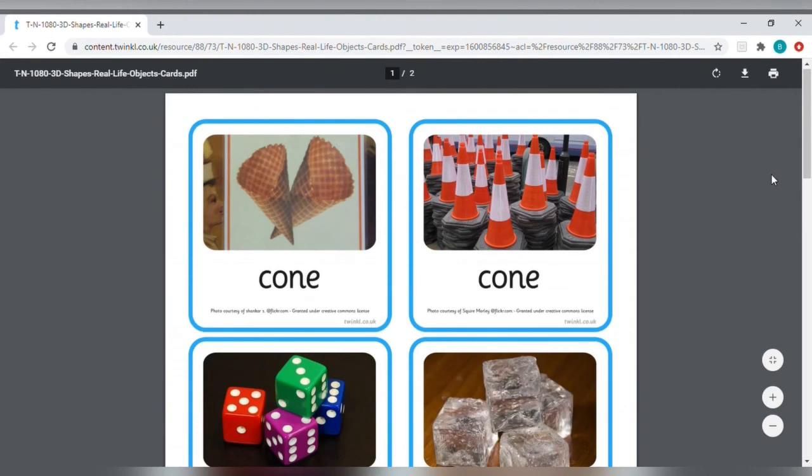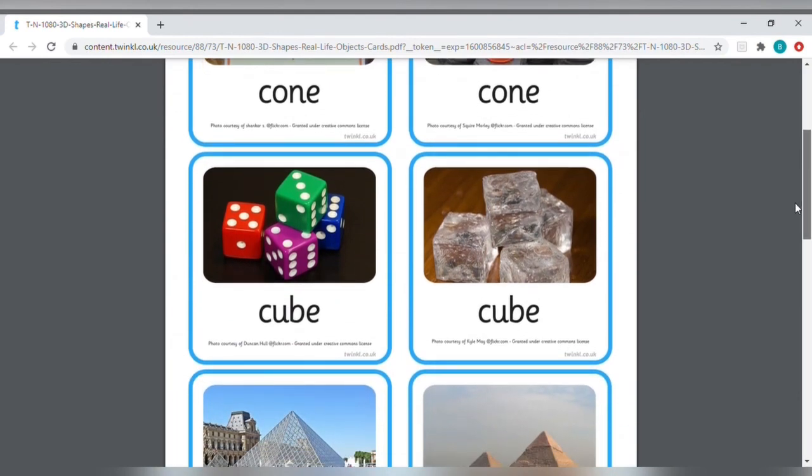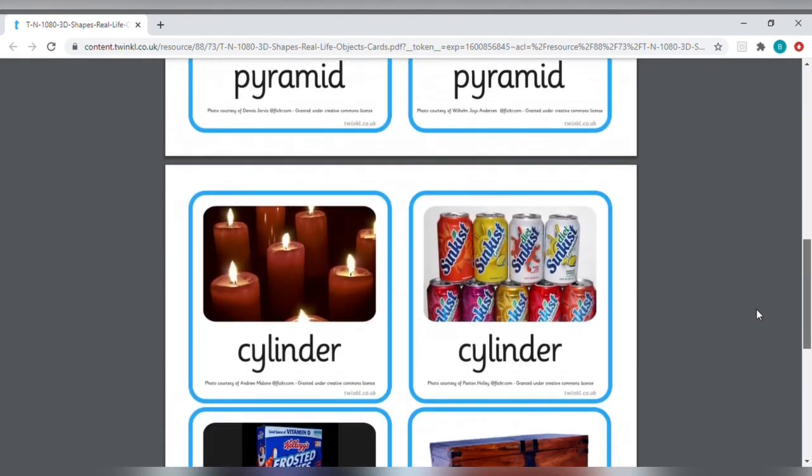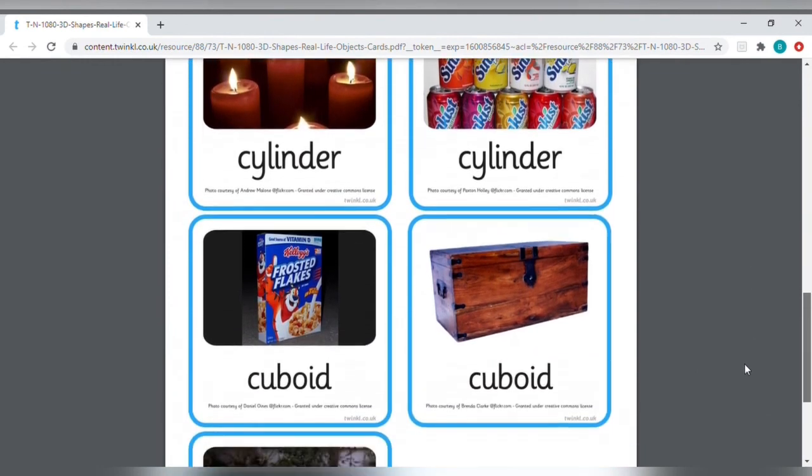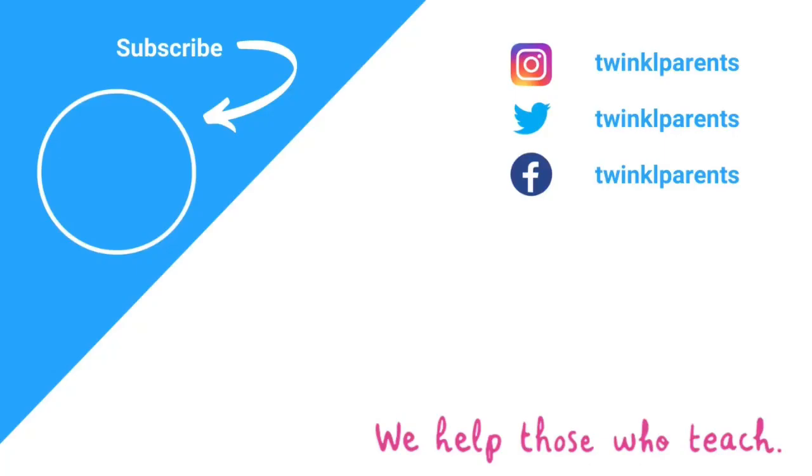You don't have to go outside to find shapes. You can find them in lots of different places. You might find dice around your house, candles perhaps, cans of drink, or cereal boxes. The possibilities are endless.